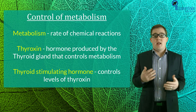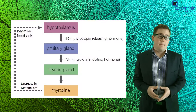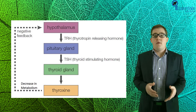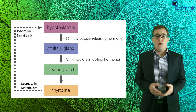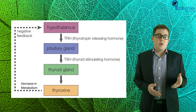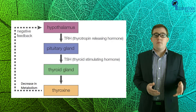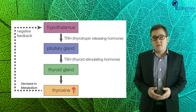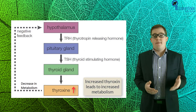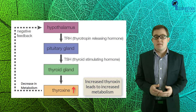Levels of thyroxine are actually controlled by another hormone, thyroid stimulating hormone. An example of how they work can be seen in this diagram. If thyroxine levels fall and energy production decreases, this is detected by receptors in the hypothalamus region of the brain. The hypothalamus then secretes thyrotropin releasing hormone, which stimulates the anterior pituitary gland to release thyroid stimulating hormone. That hormone travels through the bloodstream to the thyroid gland, which then releases thyroxine, increasing metabolic rate and stimulating energy release. This is yet another example of negative feedback helping to maintain homeostasis.